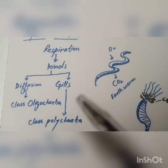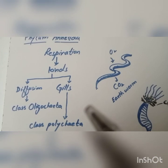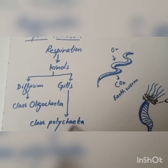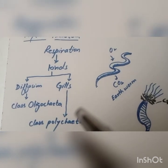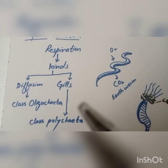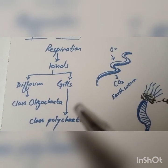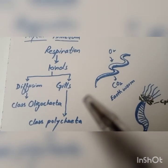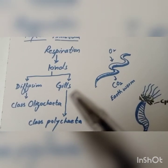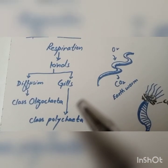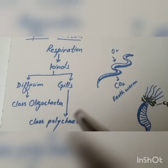The second type is through gills, and gills are found in the class Polychaeta. Polychaeta lives in the sea or water and they have no lungs. There are gills present through which they exchange gases.